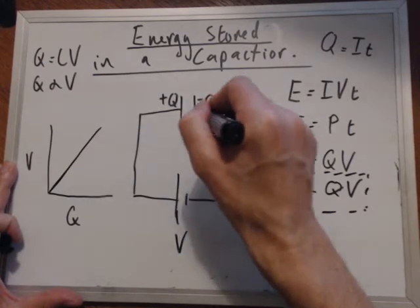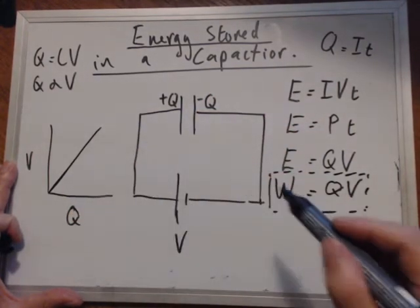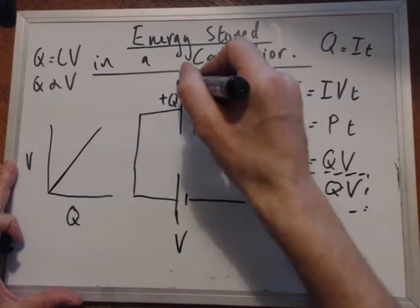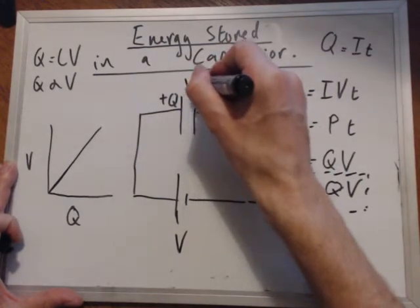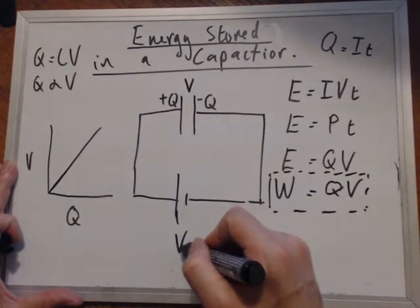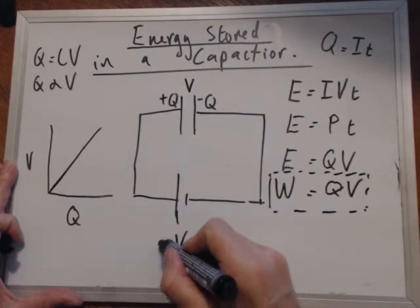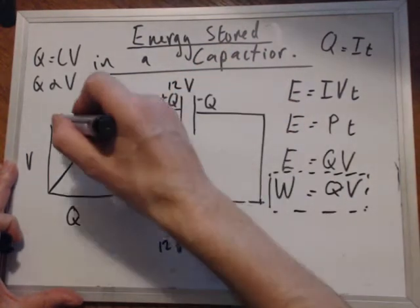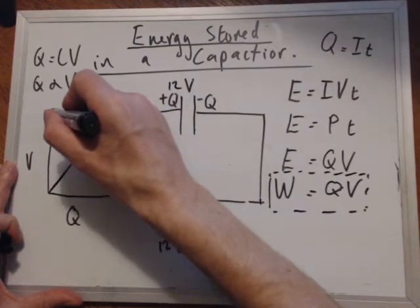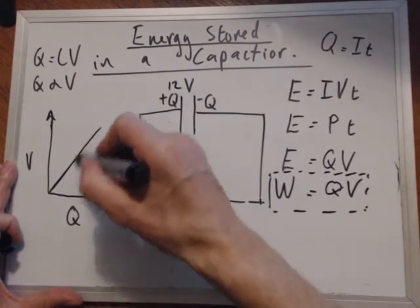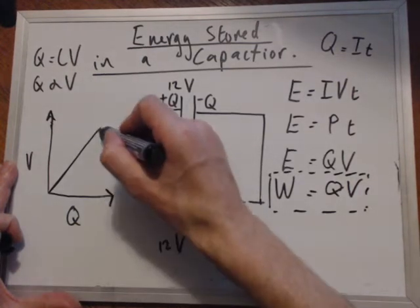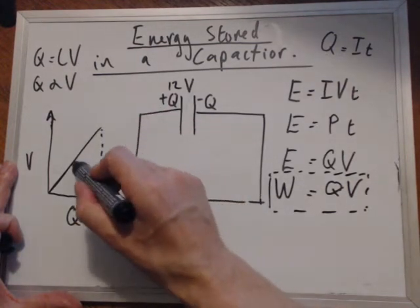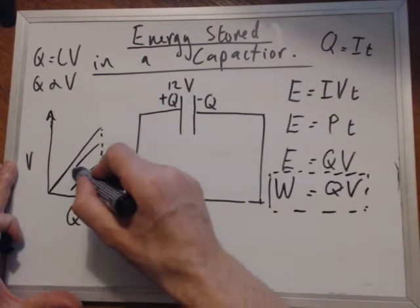As the potential across the capacitor increases, so does the charge, until the potential across the capacitor V is equal to potential across the supply. Maybe if that's 12 volts, eventually that will get to 12 volts. So there you go. This is a graph of voltage against charge. So therefore, you will find the work done is the area under the graph here. That is the work.